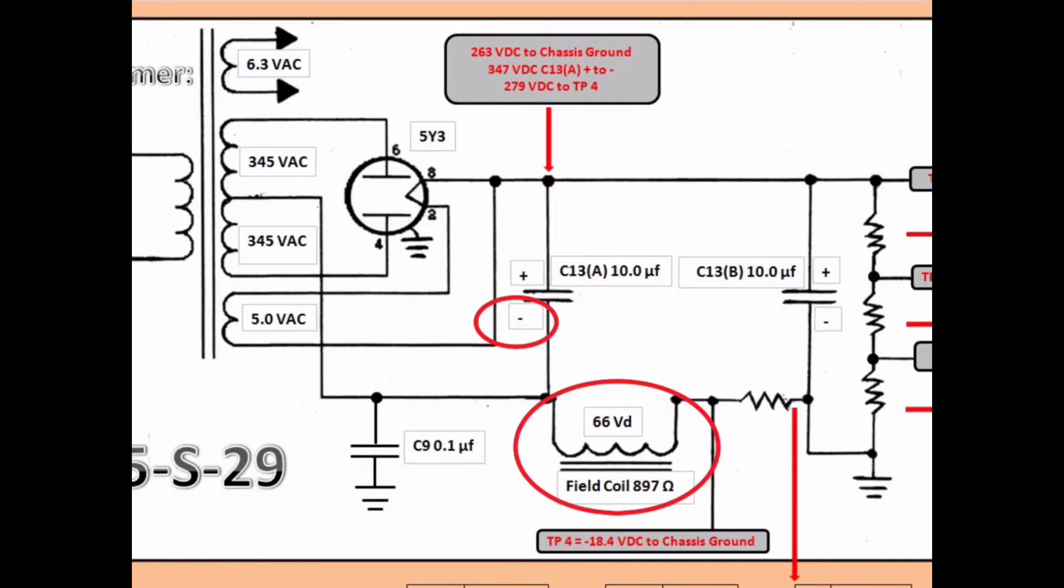The filtering action of the choke itself is the same regardless if it was on the top side or the bottom side. You will notice that we have a 66 volt drop across that field coil. That's important to note and that's part of the design that we'll touch on in just a moment.